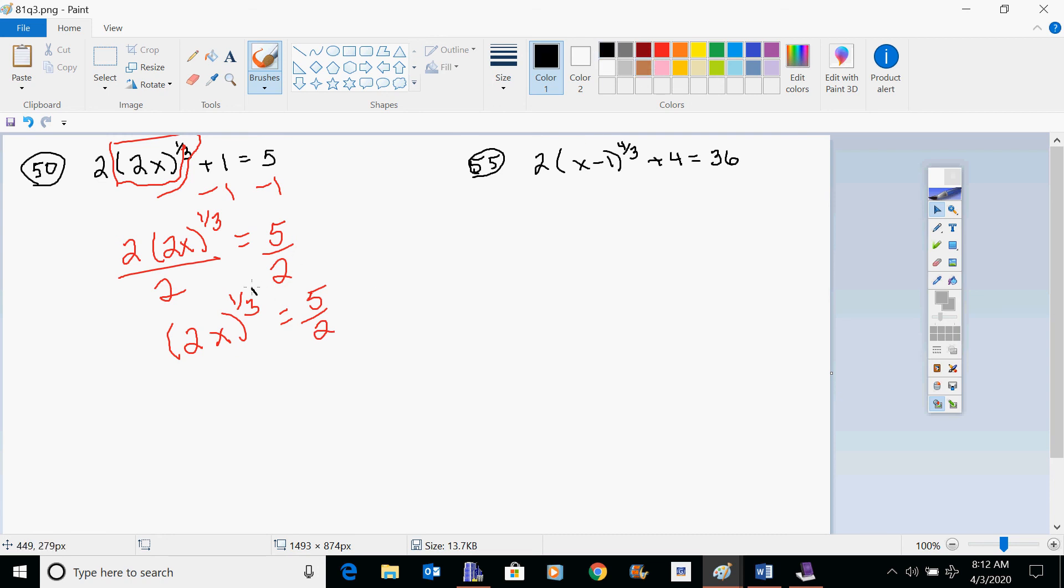So I have 2x equals 125 over 8. And then I need to divide by 2 or I'm going to multiply times a half. So x equals 125 over 16. I'll tell you the cube root ones are a little bit less likely to provide an extraneous solution. What you can do is you can plug it back in just to make sure that that gives you the right answer.